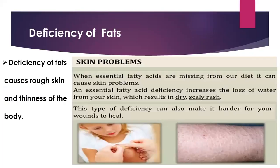Next is deficiency of fats. Fat deficiency causes rough skin and thinness of the body. If you have fat deficiency, skin problems may arise. When essential fatty acids are missing from your diet, this is caused. Fats get stored beneath the skin, protecting us from heat and cold. This type of deficiency can also make it harder for wounds to heal. You can see pictures of dry and scaly rash and loss of water from the skin.